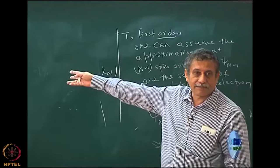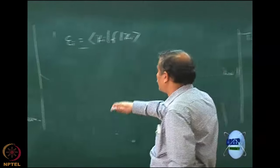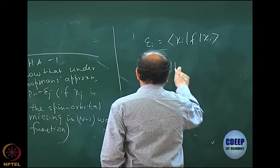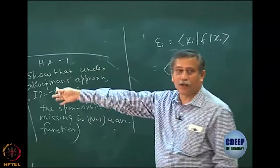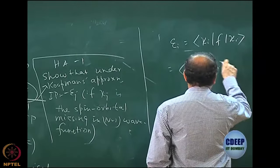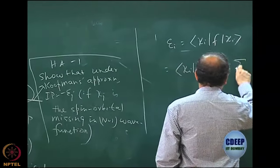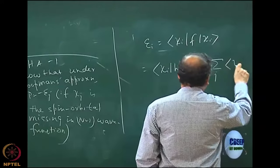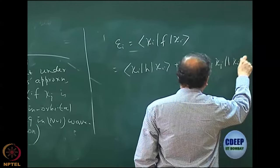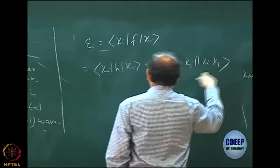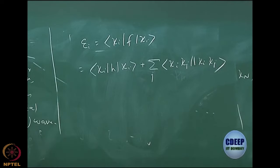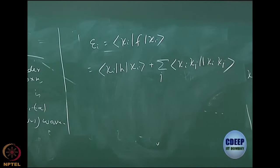So if I just take the matrix element or expectation value of the Fock operator f with chi_i, it is trivial to show that this is called the orbital energy. You can write down the matrix element with the Fock operator, and it will become chi_i h chi_i. This will help you clean up the home assignment very easily.